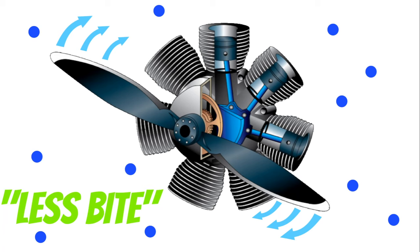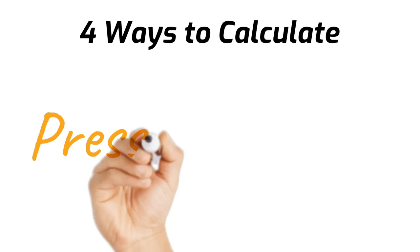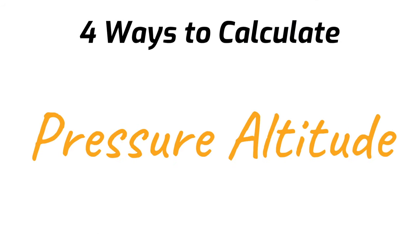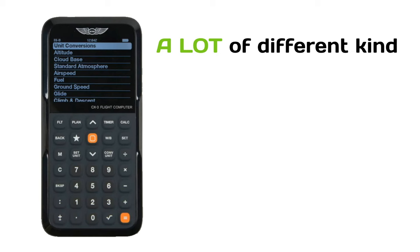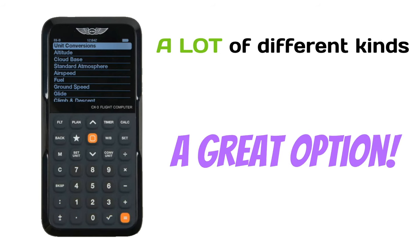Now you're starting to see why thinner air decreases our performance. Pressure altitude is the starting point for all our performance calculations, and there are actually four ways we can calculate it. The first and most accurate method is to use a flight computer. I'm not going to explain how to use one of these in this video because there are so many different types, but these digital flight computers are a great way to make these calculations.